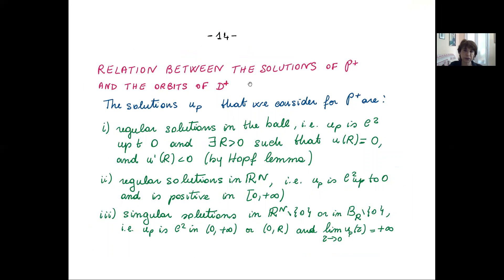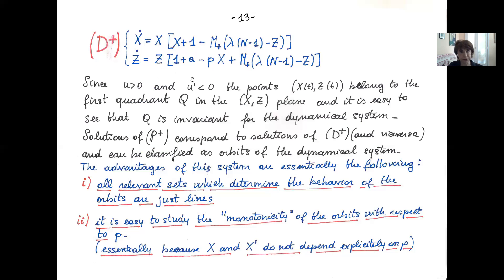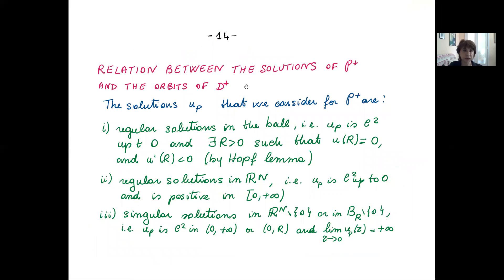What is the correspondence between solutions of the second order ODE and orbits of the dynamical system? Regular solutions in the ball — regular up to zero that vanish at some radius R — correspond to orbits where x blows up in finite forward time while z decays to zero, and at minus infinity the orbit approaches a stationary point. Regular solutions in all of R^n, defined on the whole interval zero to plus infinity, correspond to orbits defined on all of minus infinity to plus infinity.